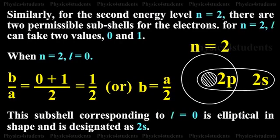For n = 2, the possible l values are 0 and 1. When l = 0 is substituted into the formula, we get b = a/2, meaning the major and minor axes are not the same. This results in an elliptical shell, named 2s — corresponding to n = 2 and l = 0.